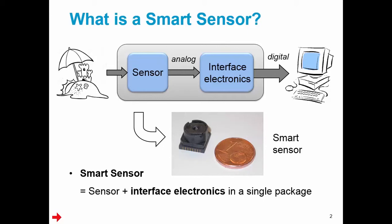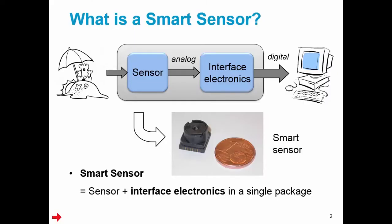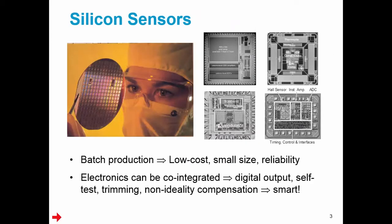A smart sensor therefore consists of a sensor and its interface electronics on the same die or at least in the same package. The function of the interface electronics is to condition and then digitize the sensor's analog output.